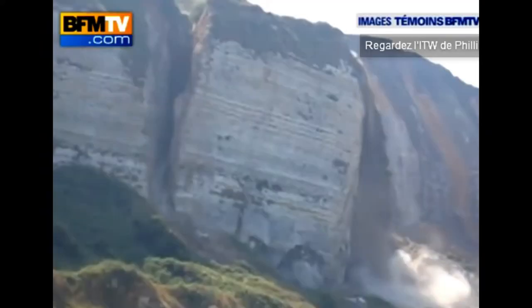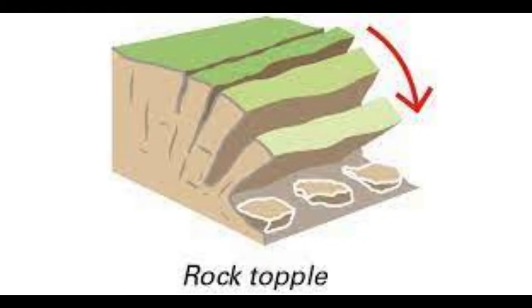Topple slides can be particularly dangerous as they can result in large blocks of rock or soil tumbling down the slope, posing a serious threat to human life and property. They can also cause significant damage to infrastructure such as roads and buildings. To minimize the risk, it is important to avoid building structures on steep slopes or near the edges of cliffs, to stabilize slopes using retaining walls or other measures, and to monitor slopes for signs of instability such as cracking, tilting, or bulging. By taking these precautions, it is possible to reduce the likelihood of topple slides and their associated impacts.